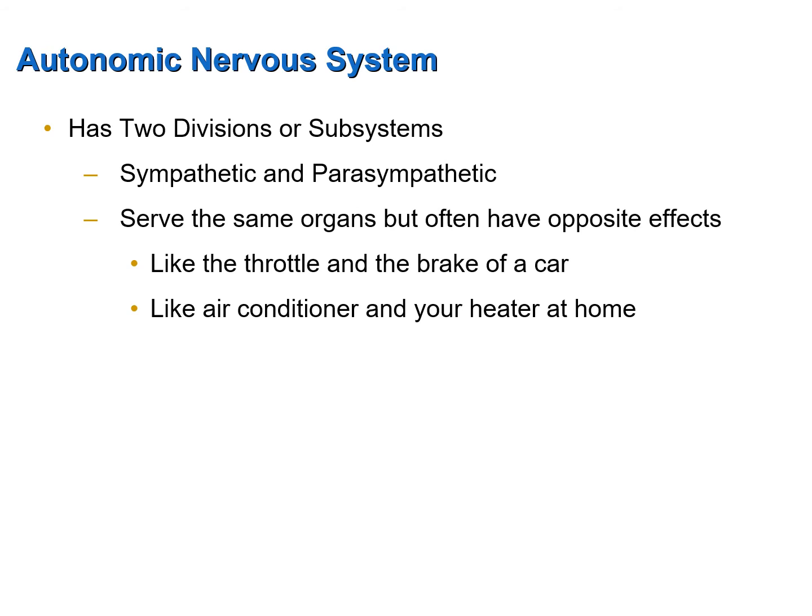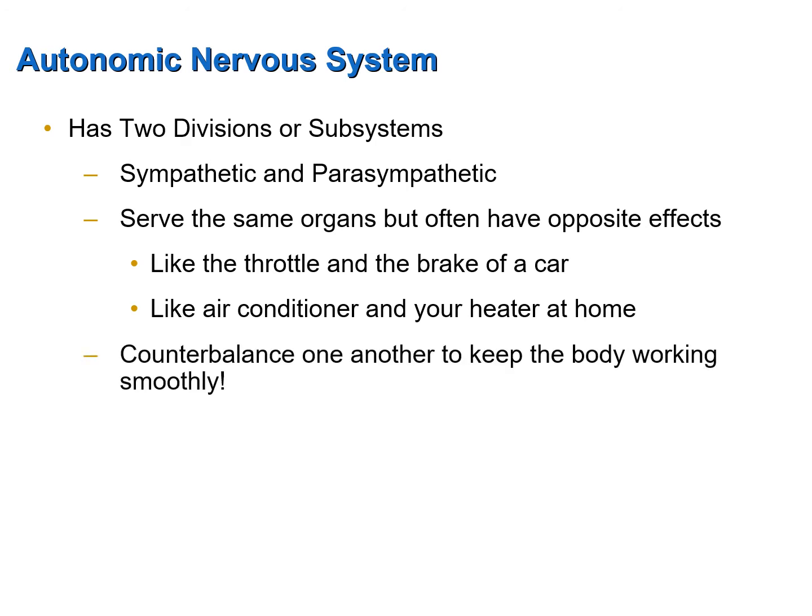These two divisions often serve the same organs but usually have opposite effects. Take as an analogy the throttle and the brake of your car — they both affect speed, but in opposite ways. Or consider your air conditioner and heater — they both control temperature, but one increases it and one decreases it. These two subsystems counterbalance one another to keep the body working smoothly.